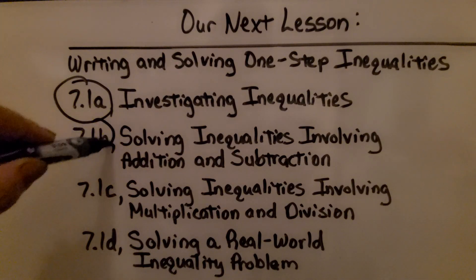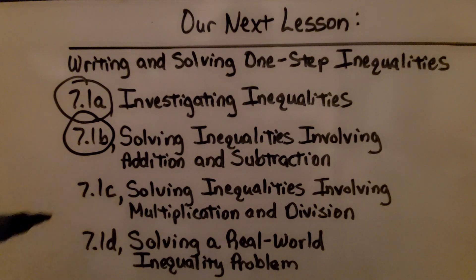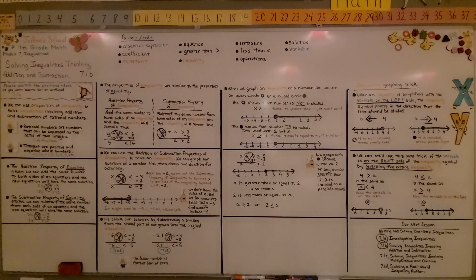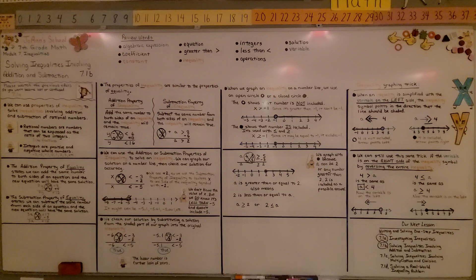So we've finished 7.1b and we're going to move on to 7.1c, where we'll do solving inequalities involving multiplication and division. A lot of students get confused when graphing inequalities — just remember the inequality symbol acts like an arrowhead telling you which direction to shade, as long as the variable is on the left side.